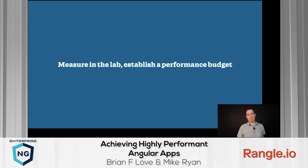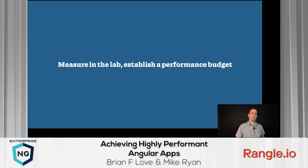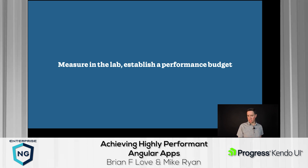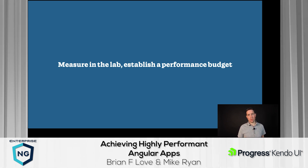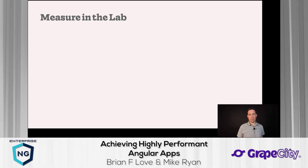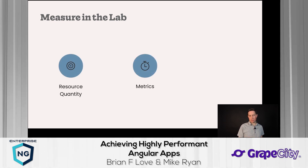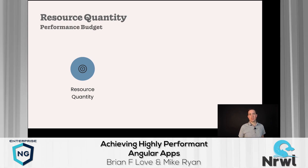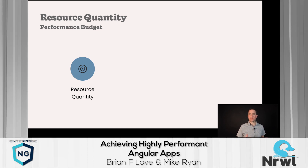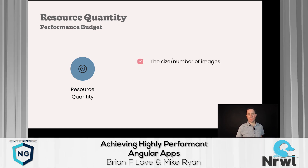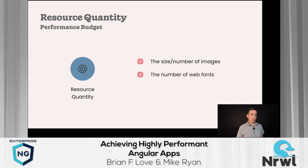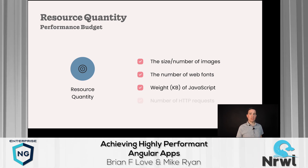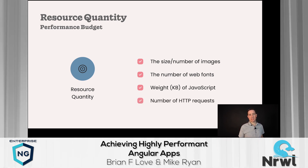Now that we've covered Core Web Vitals, I want to talk about how we measure in the lab and how we establish a performance budget, because measuring is important but monitoring is equally important. For lab measurement we look at resource quantity metrics: the size or number of images, the number of web fonts, the bundle weight of our JavaScript, and the number of HTTP requests being made.